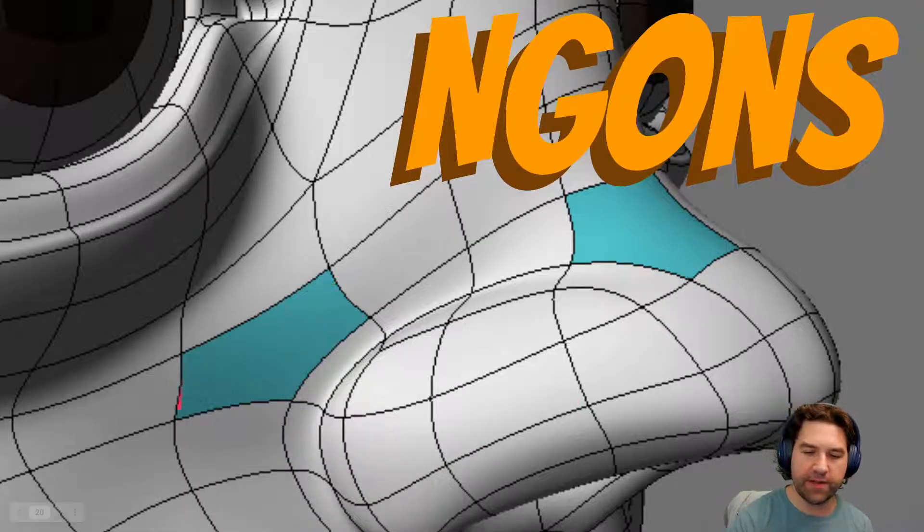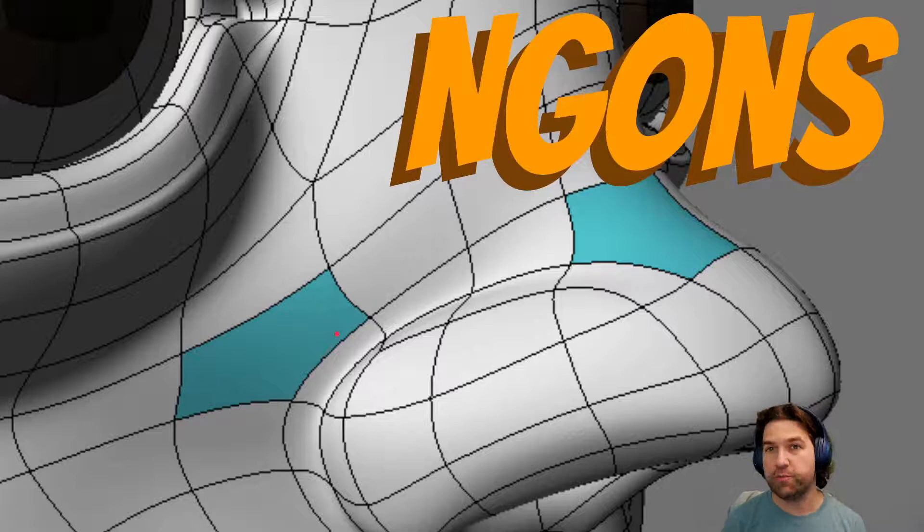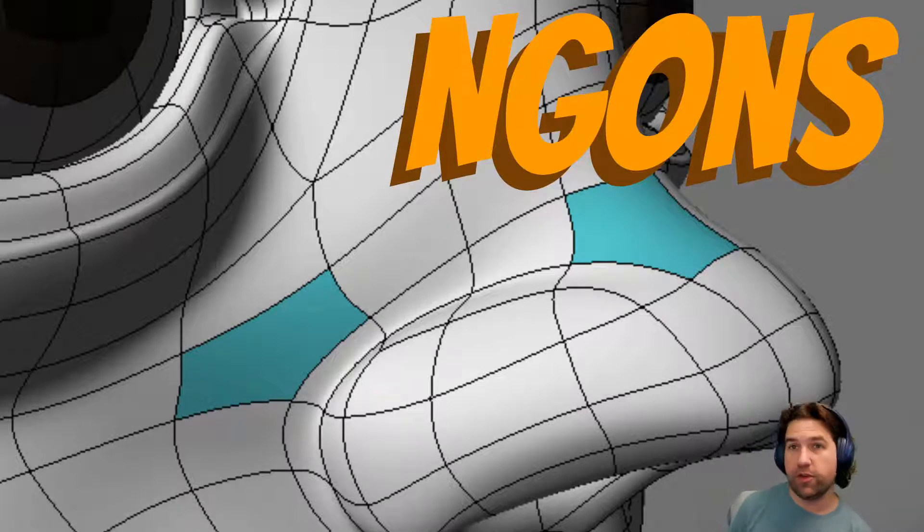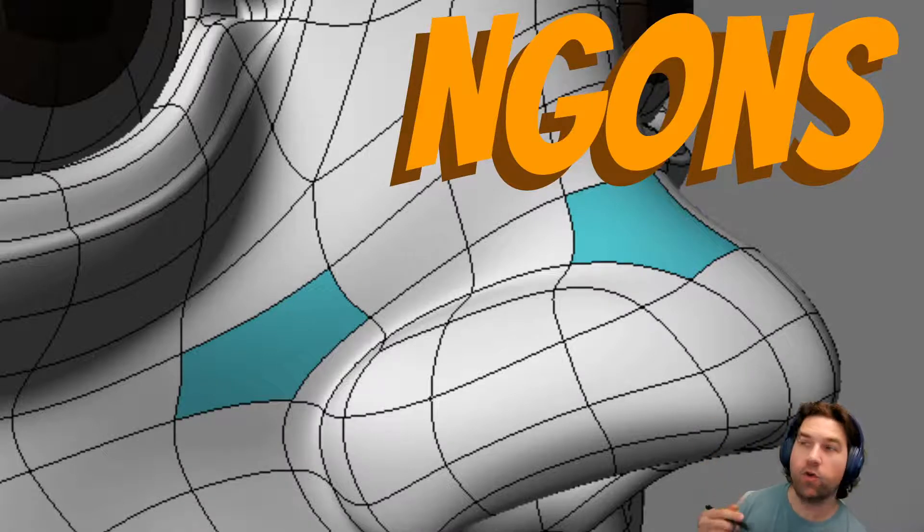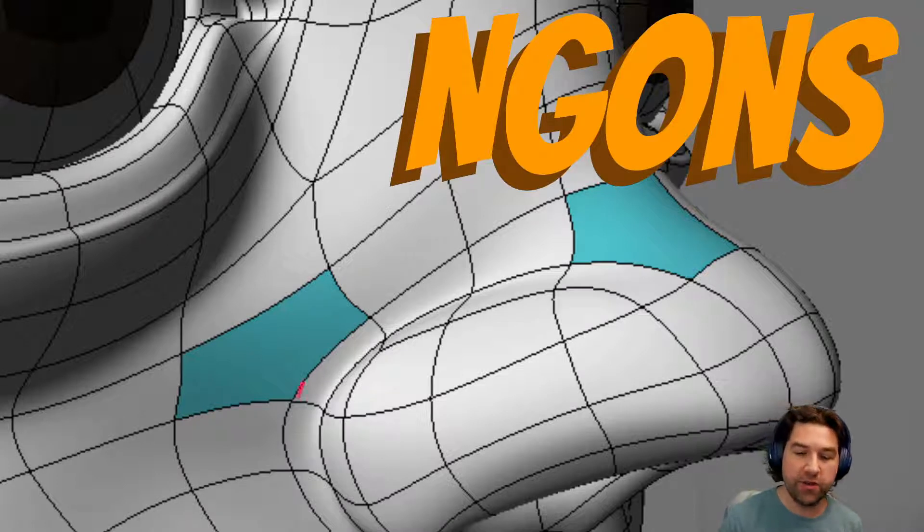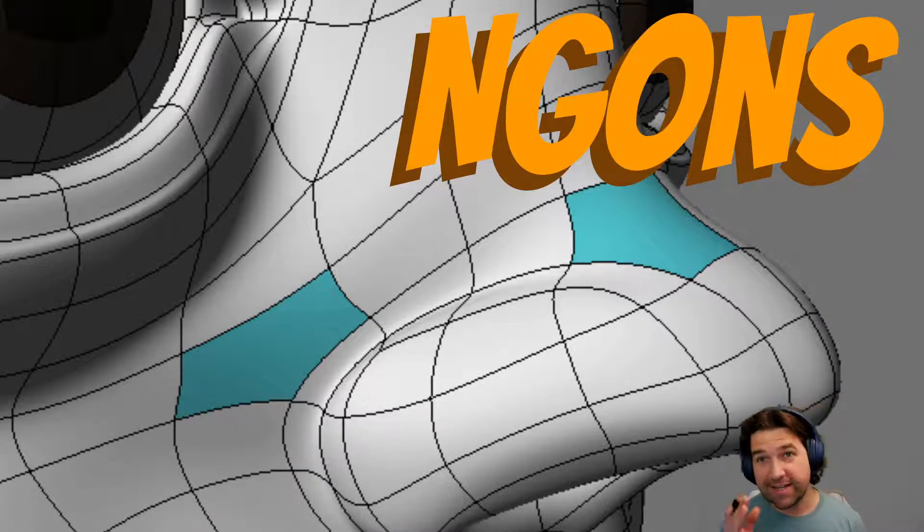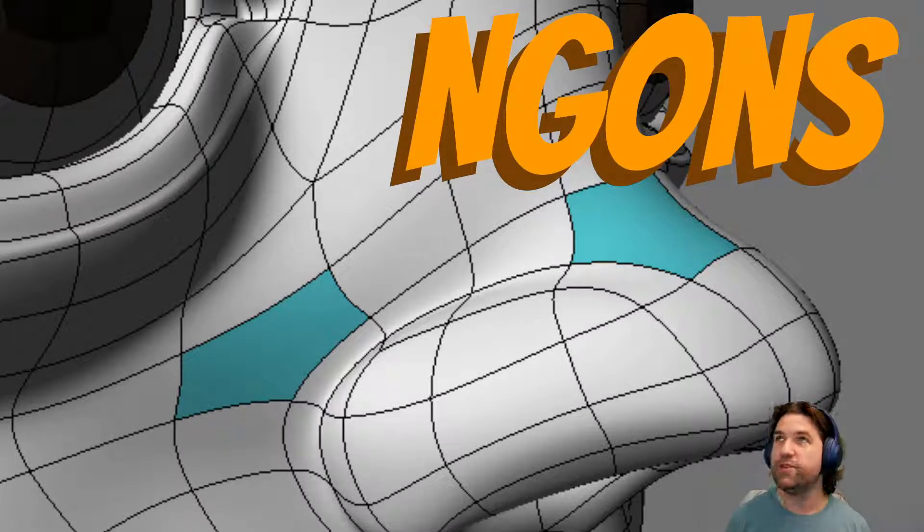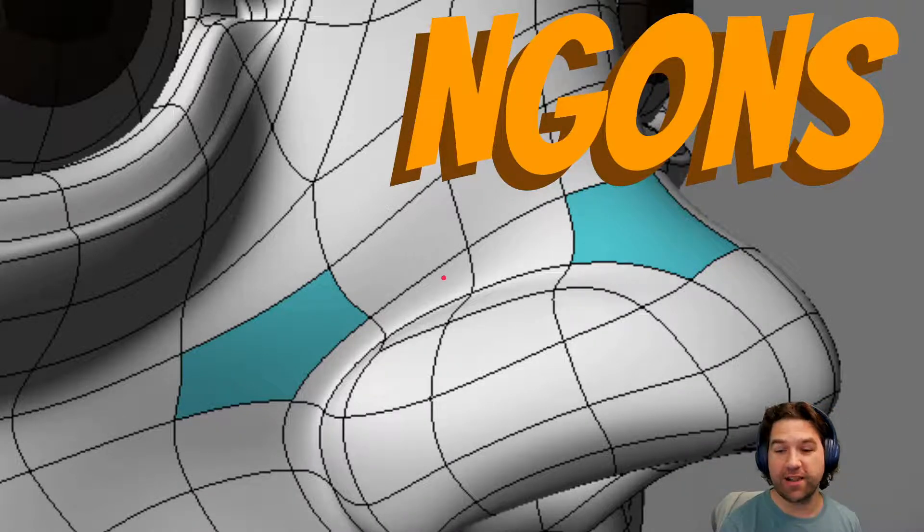N-gons, when they show up on models, can create these stretching or batwing effects. They can create weird pinching or areas of smoothing that don't work right. Maybe you've tried to do your loop cut tool or an extrude or an inset and it doesn't do what you expect it to do. And lo and behold, somewhere in there, there's an N-gon that's messing up your day. This is why we try our best to eliminate them and get rid of them as quickly as possible. Once I teach you about this stuff today, you won't be able to help seeing N-gons and trying to figure out how to turn them into quads.